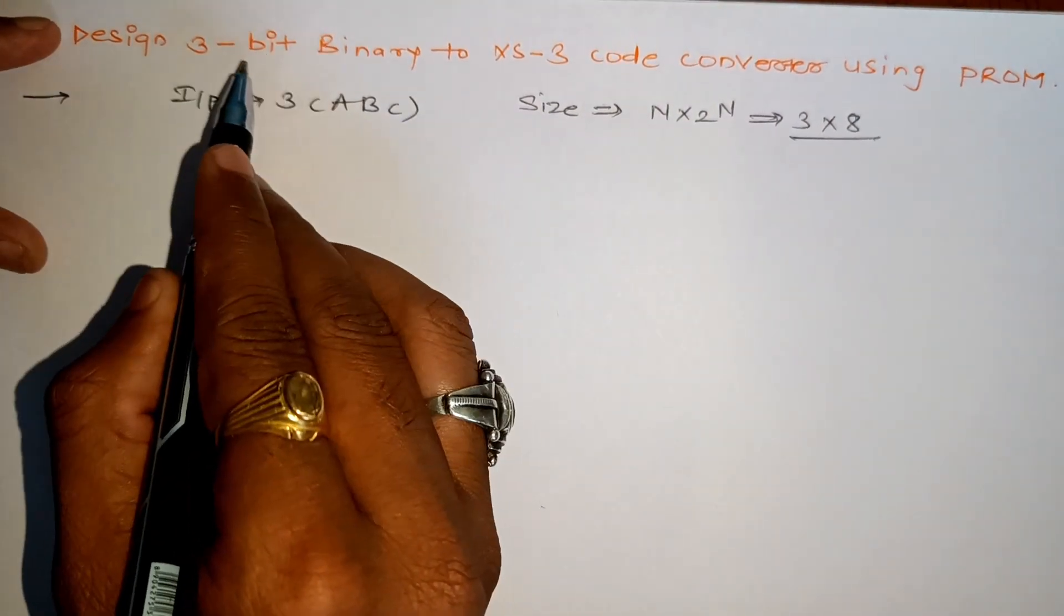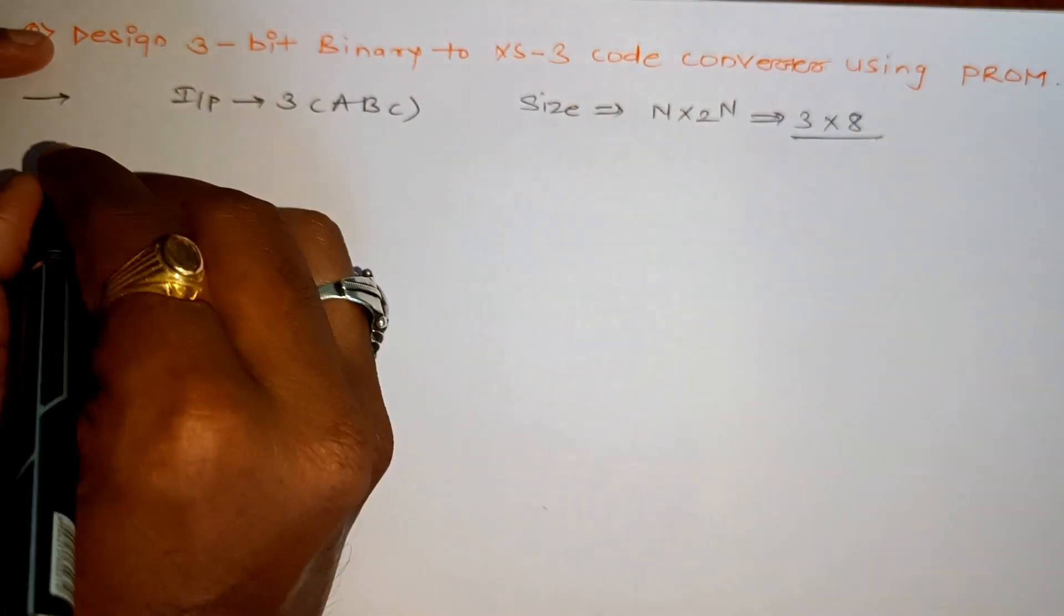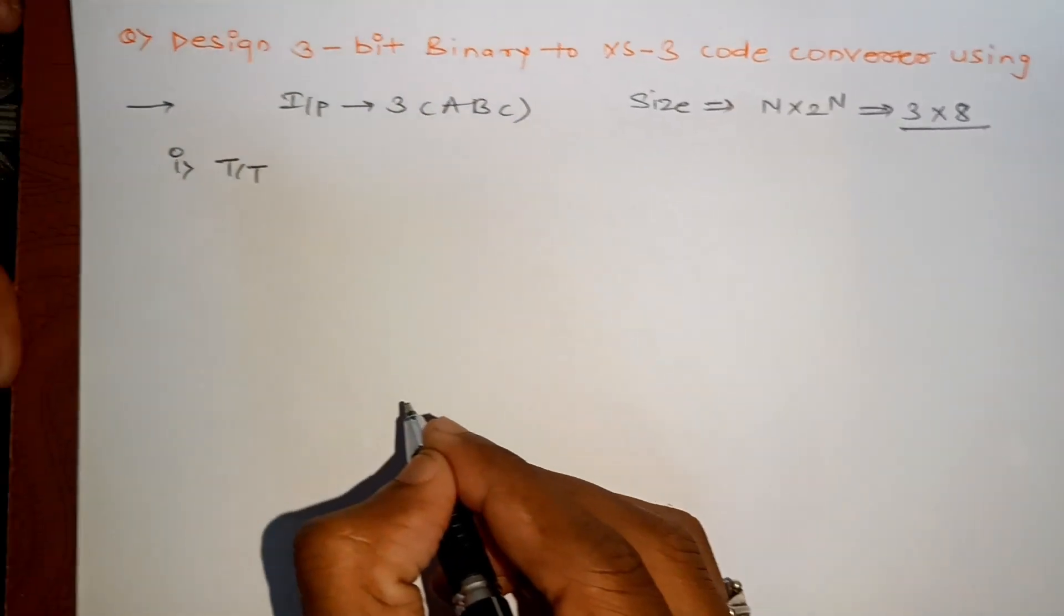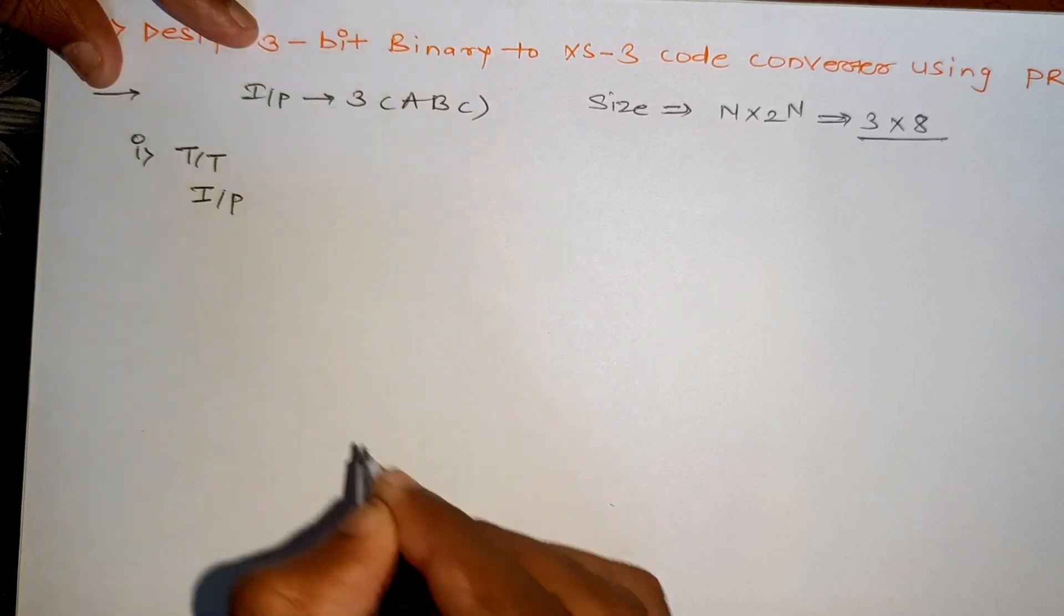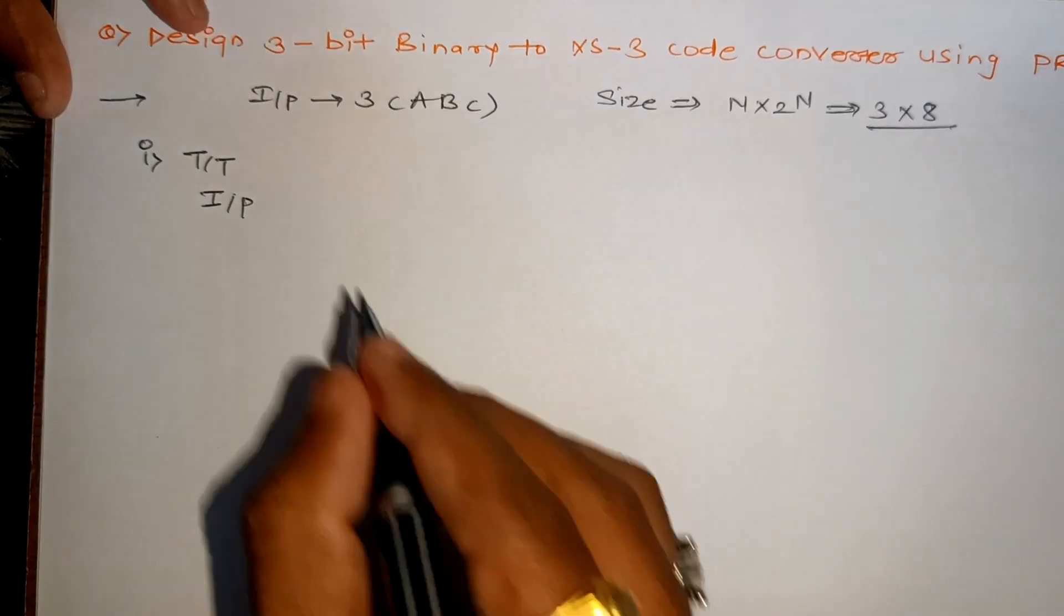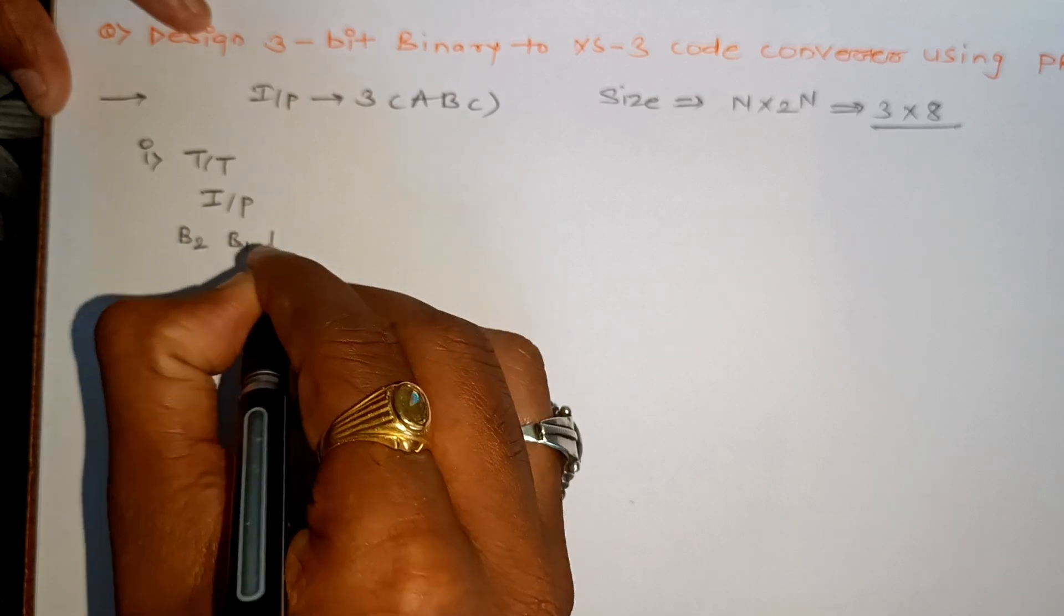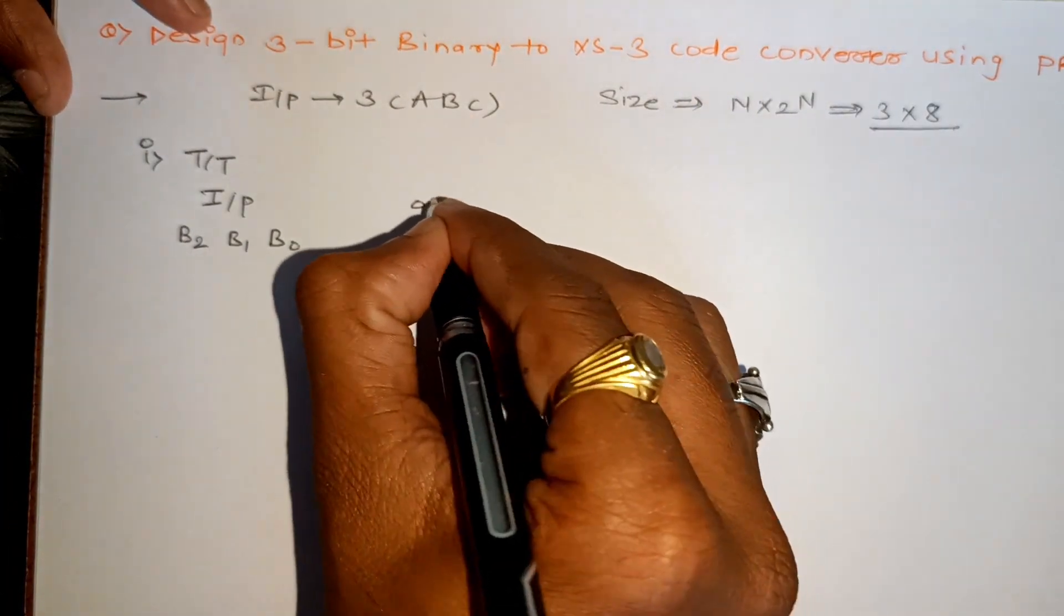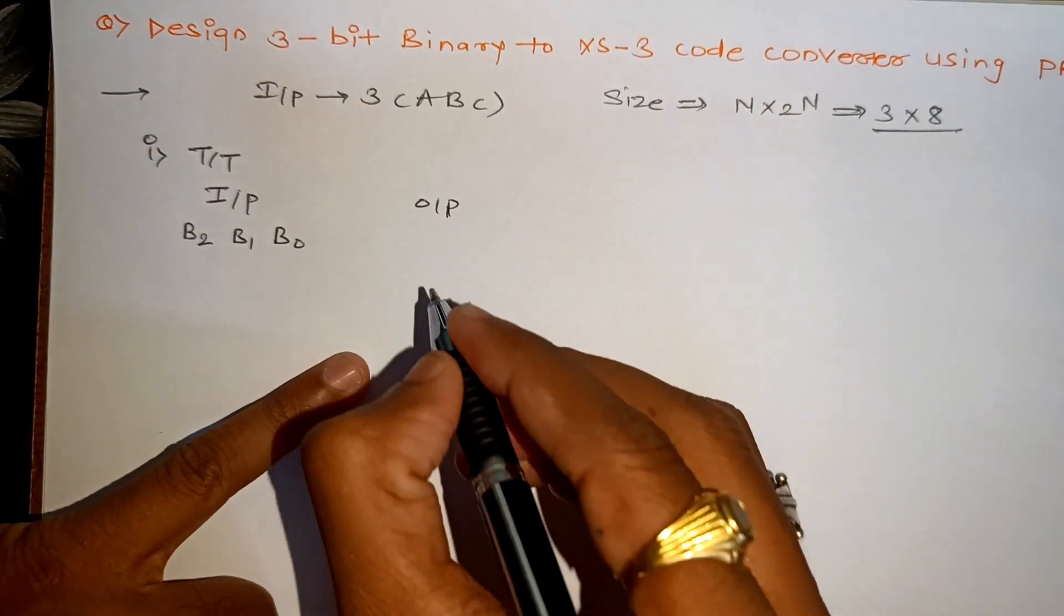So first we will design this. We have to design 3-bit to XS3 code converter. In the first step, we will take the truth table. Across the first time I am writing as input, so we have the input as 3-bit binary number. We will take B2, B1, and B0. And the output is XS3 code, so let's suppose I am writing it as X3, X2, X1, X0.